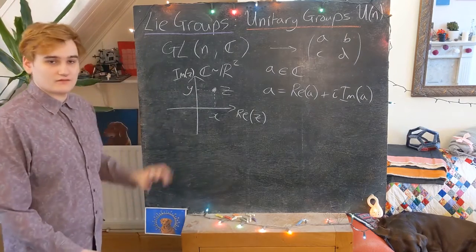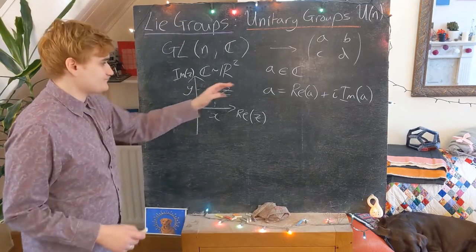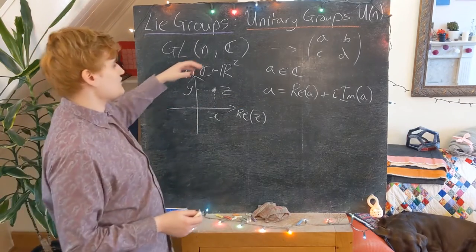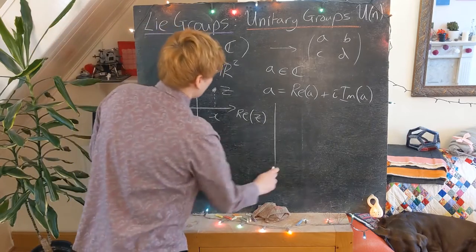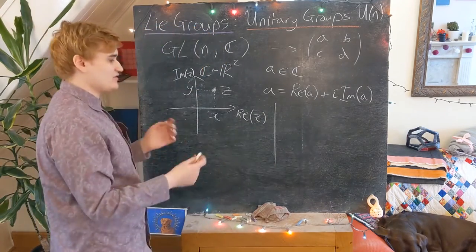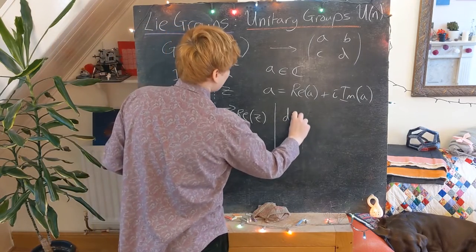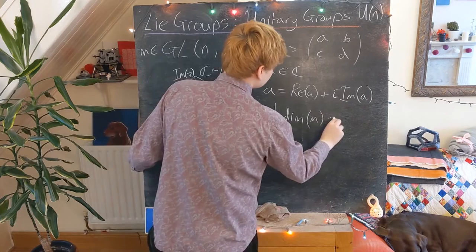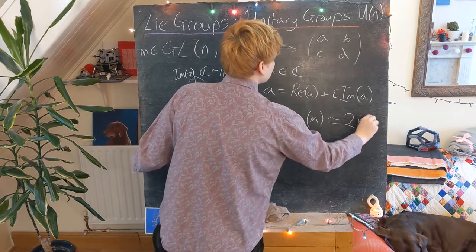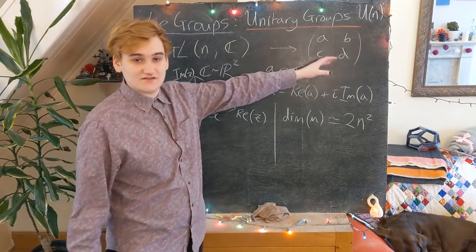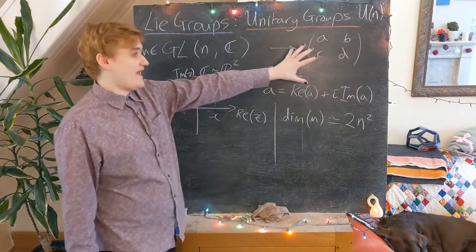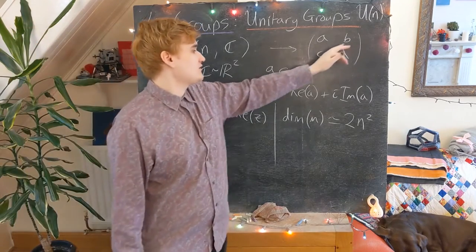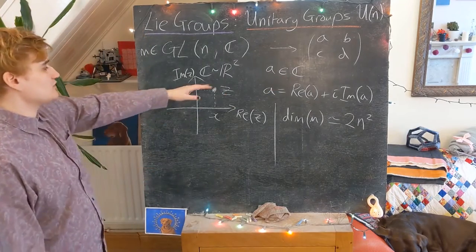We're going to make quite frequent use of the fact that a one-dimensional complex space is isomorphic to a two-dimensional real space. What we should realise is that a matrix of complex elements is now going to be twice the dimension of the corresponding real matrix. So the dimensionality of GL(n,C) elements is not n squared but rather 2n squared. Any element in GL(n,C) has dimension 2n², and for a 2×2 complex matrix this is an eight-dimensional real object.